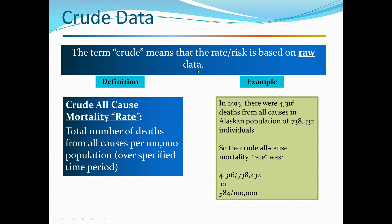The term crude means that the rate or risk is based on raw data. The crude all-cause mortality rate is the total number of deaths from all causes per 100,000 population over a specified time period. For example, in 2015, there were 4,316 deaths from all causes in the Alaskan population of 738,432 individuals. The crude all-cause mortality rate is 4,316 divided by 738,432, which reduces to 584 per 100,000 population.